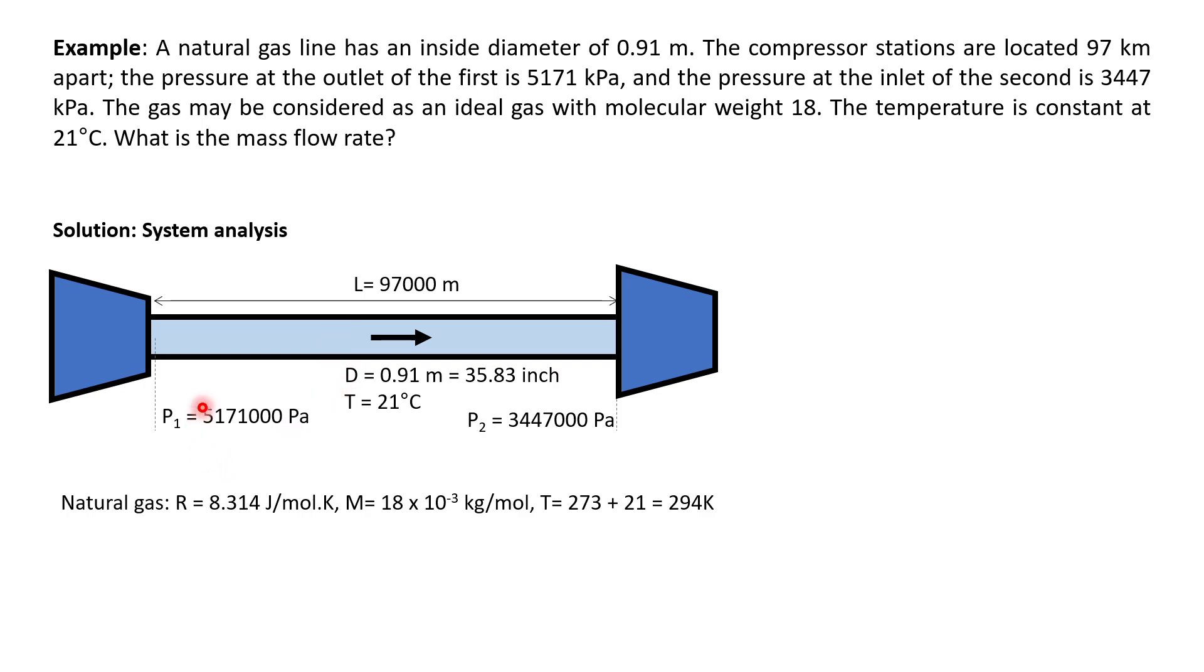The pressure exiting from the first compressor is this value, and the pressure before the second compressor is this value. And then the two compressors separated by the distance of 97 km here. That is basically the length of the pipe.